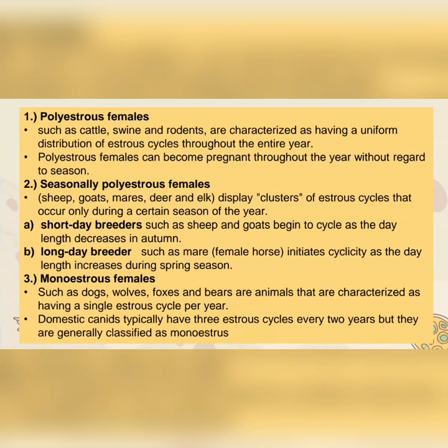Second, we have the seasonally polyestrous females, such as sheep, goats, mares, deer, and elk. They display clusters of estrous cycles that occur only during a certain season of the year. This type can be categorized into two: first, short-day breeders, and second, long-day breeders. Short-day breeders, such as sheep and goats, begin to cycle as day length decreases in autumn. Long-day breeders, such as the mare or female horse, initiate cyclicity as day length increases during spring season.